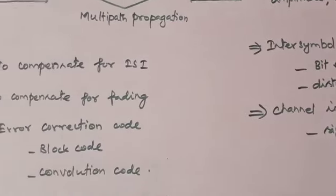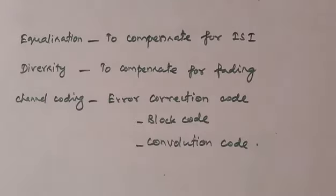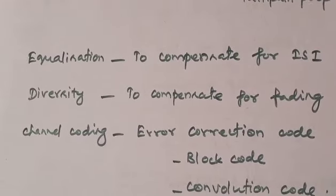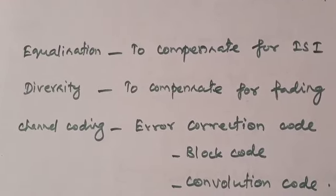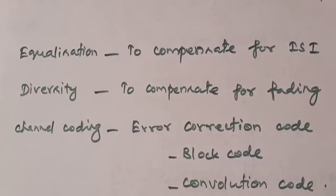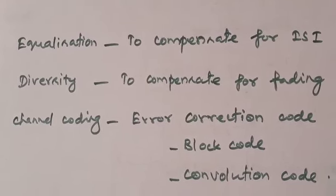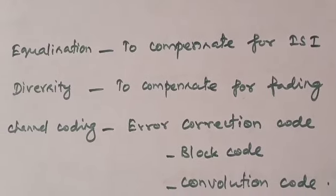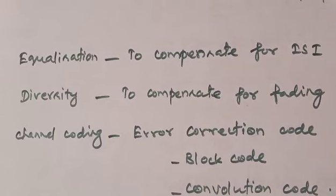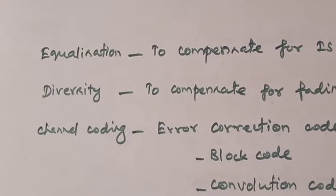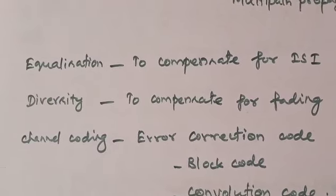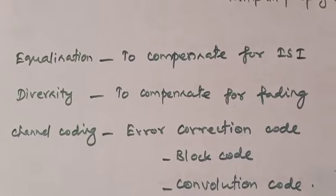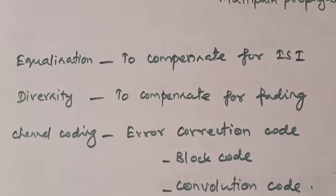There are three techniques used for reducing the effects of multipath propagation. First, equalization to compensate for inter-symbol interference. Second, diversity to compensate for fading due to channel impairments. Third is channel coding, which acts as error correction code. Examples of channel coding are block code and convolution code. In our syllabus, we have only two: equalization and diversity.